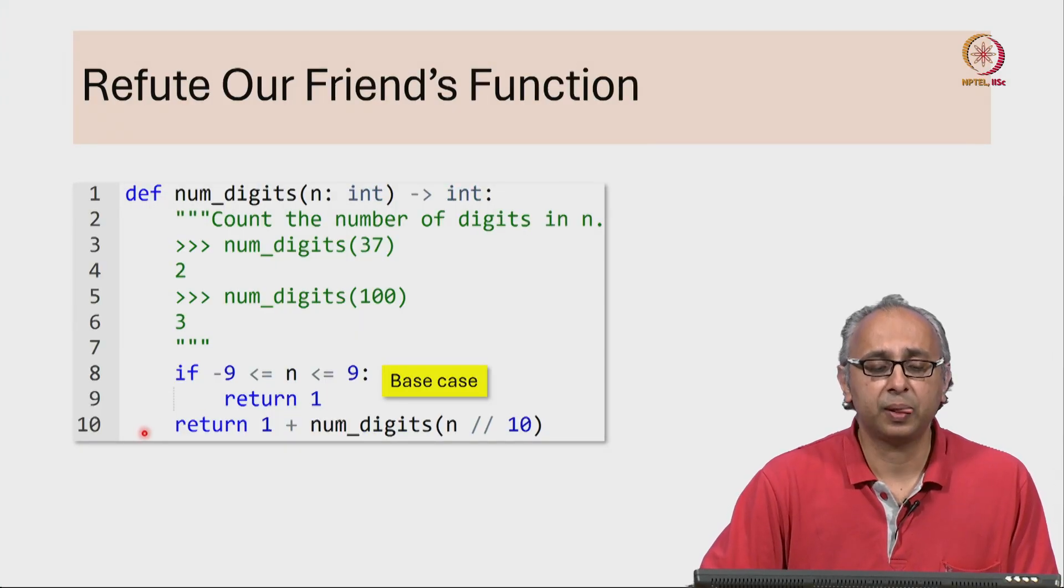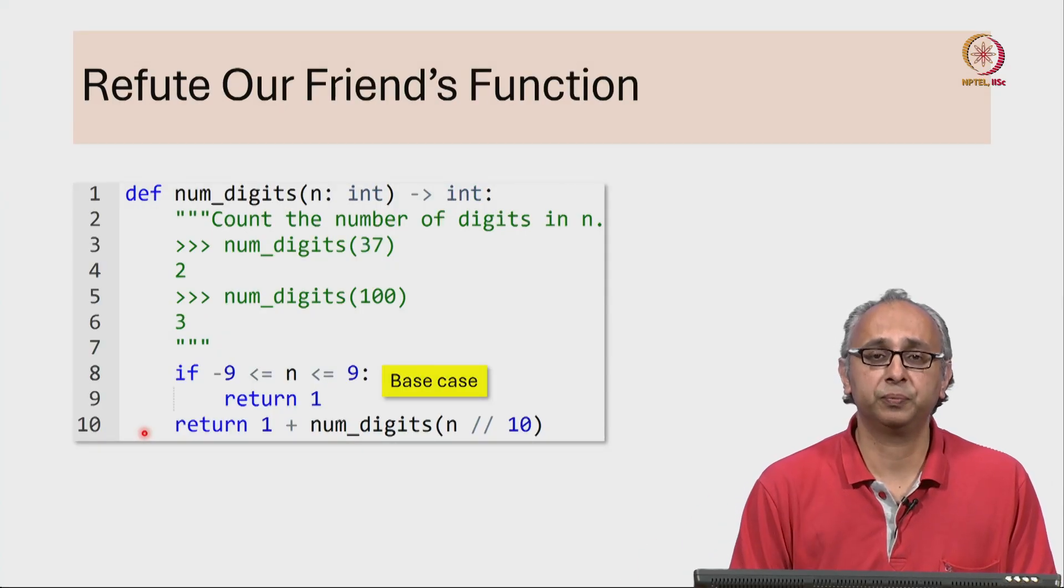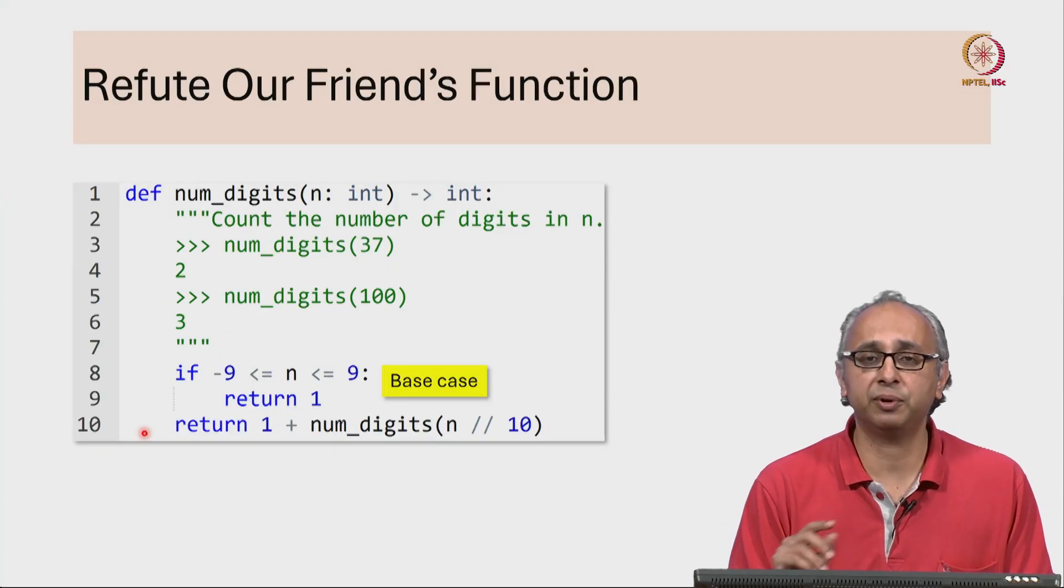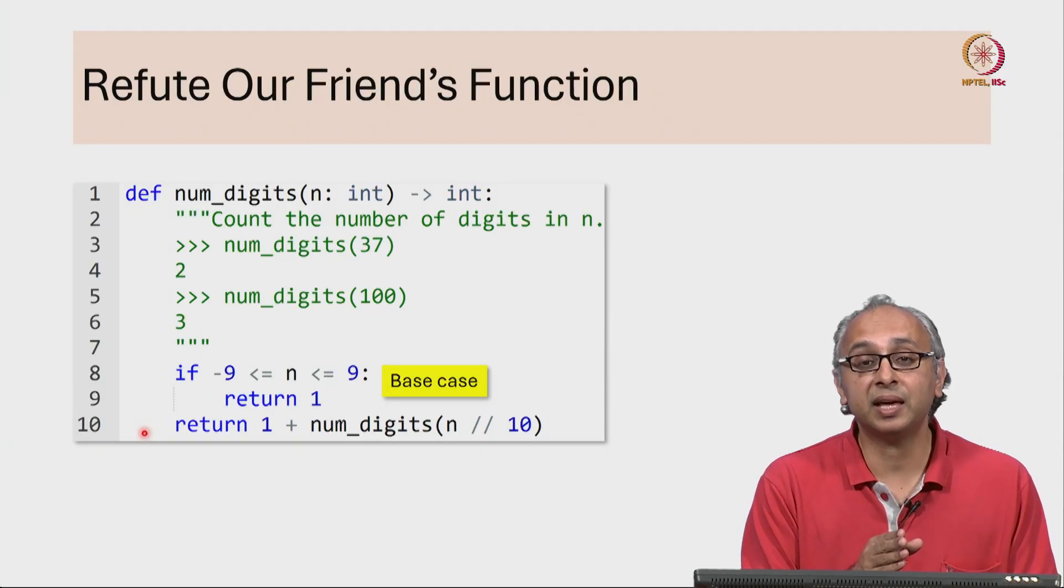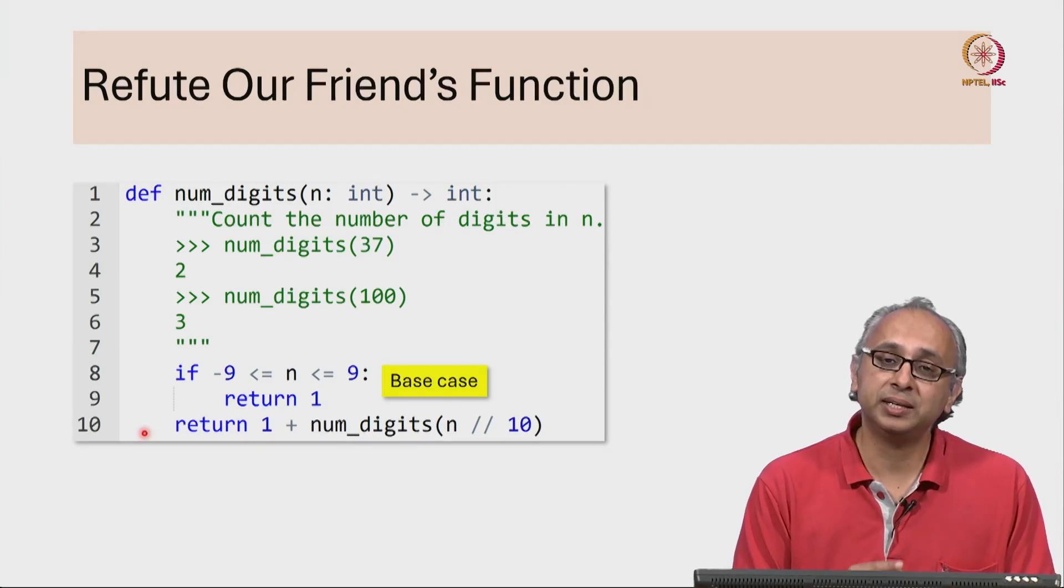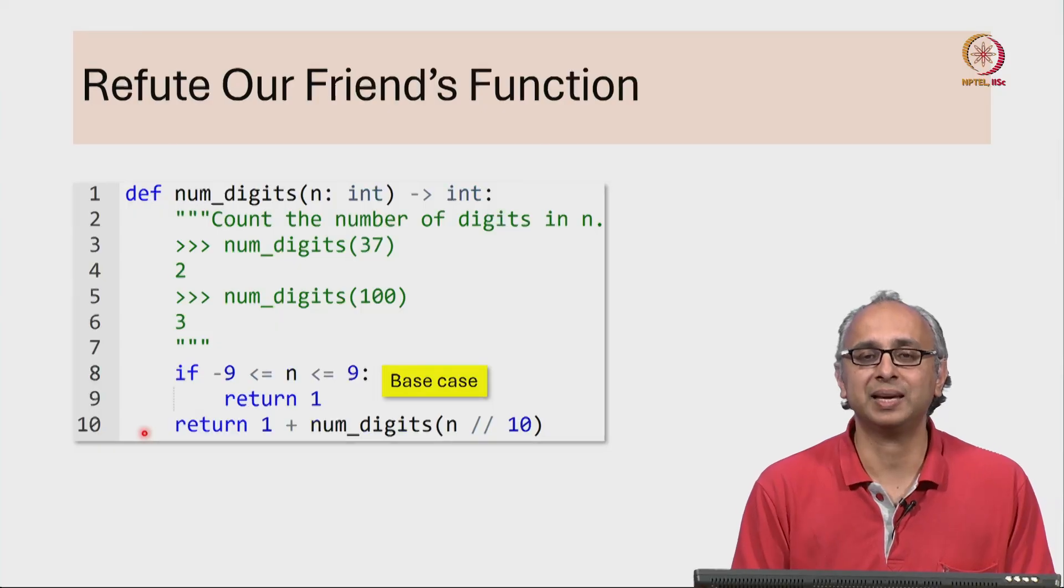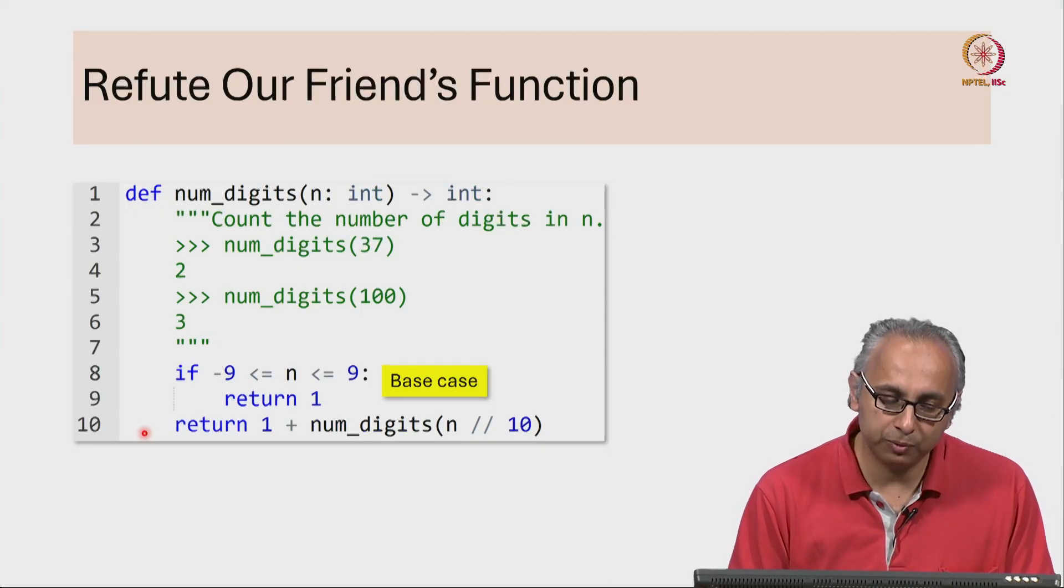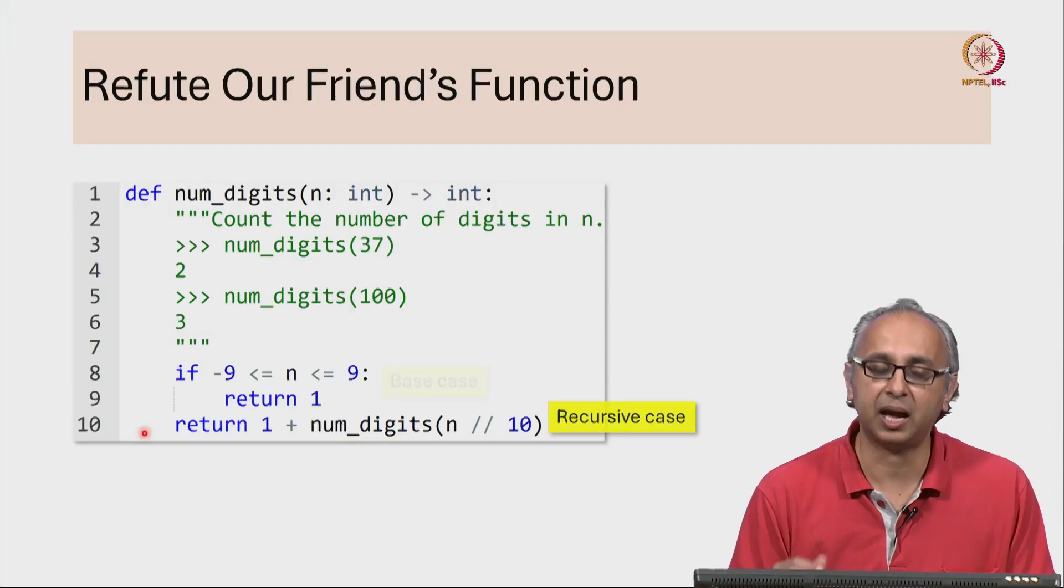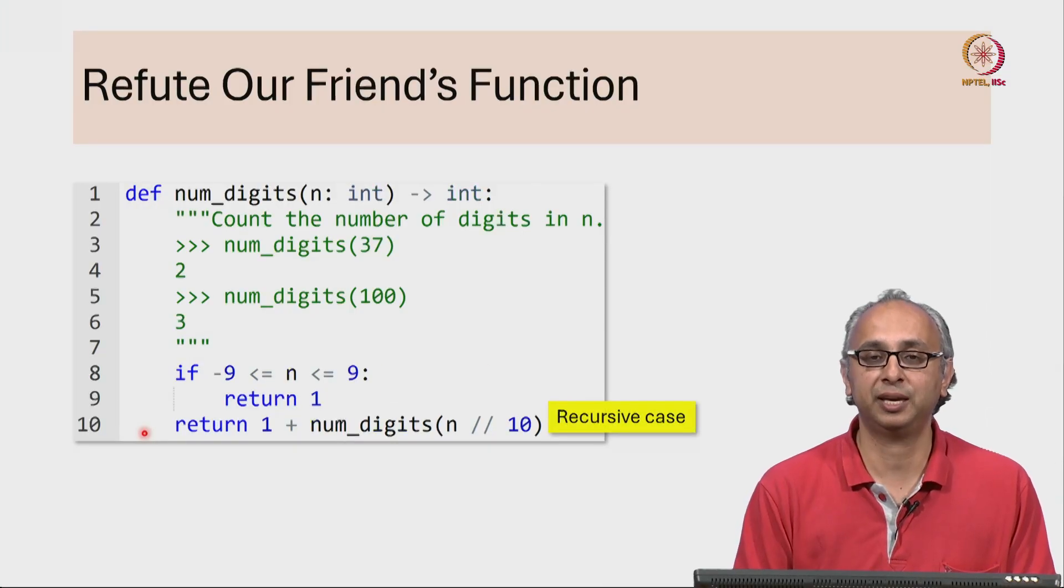So if we ever get to line 10, then we know for sure that n is not in the range minus 9 to 9. So that means it is either less than or equal to minus 10 or it is greater than or equal to plus 10. In that case it has multiple digits and then we will go to line 10 and that is our recursive case.